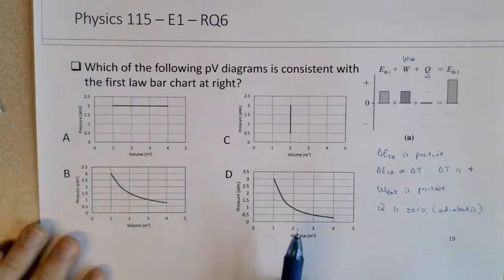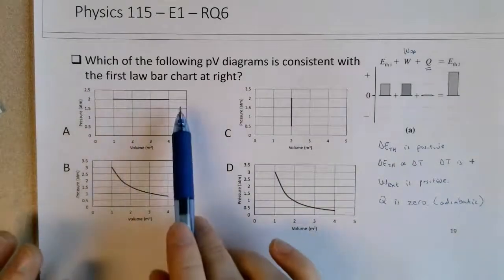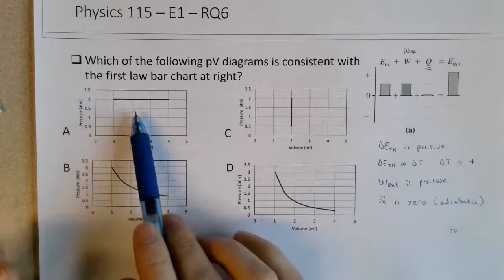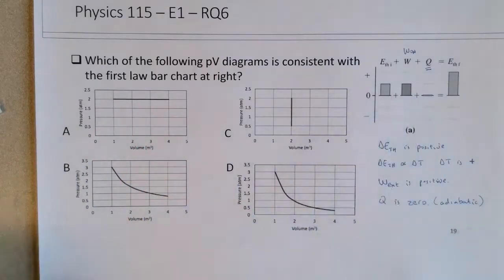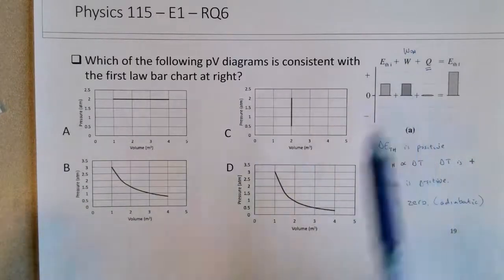This is the information. We have an increase in the thermal energy, we have increase in temperature of gas, we have positive external work, and Q is zero. But I want to analyze each one carefully. If we think about graph A, it doesn't show us whether this is an expansion or compression. To be consistent with the graph, it would have to be a compression.